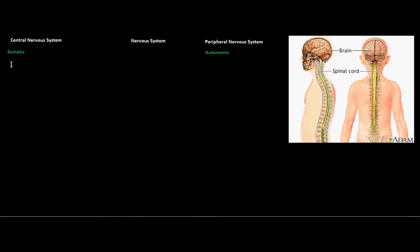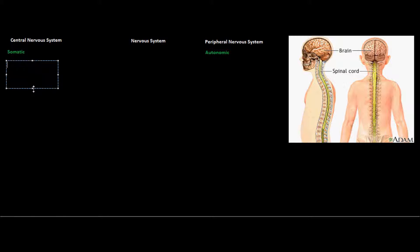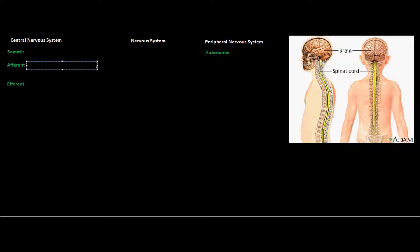Let's start with the central nervous system and understand the things that really come into play when we talk about it. When we talk about the central nervous system, we're often thinking about afferent and efferent nerve signals. Afferent nerve signals are those that come from receptors in various parts of the body and travel down to the spinal cord, and then eventually are relayed to the brain in order for the brain to pick up information about our outside environment.